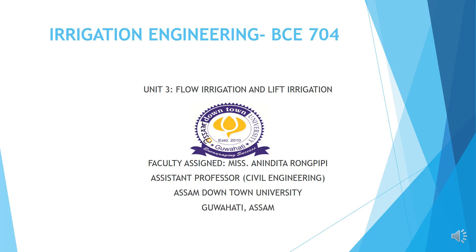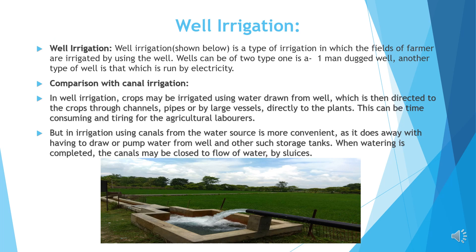Good morning everyone. Today we will complete Unit 3, Flow Irrigation and Lift Irrigation. Well Irrigation, as you can see in the picture below, is the type of irrigation in which the fields of a farmer are irrigated by using the well. Wells can be of two types: one is a manually dug well, and another type is one that is run by electricity.